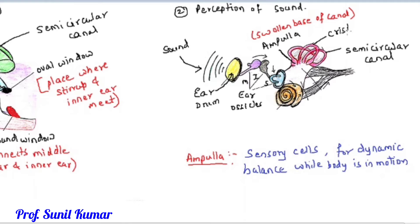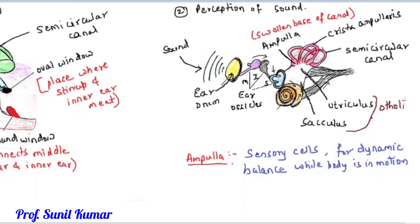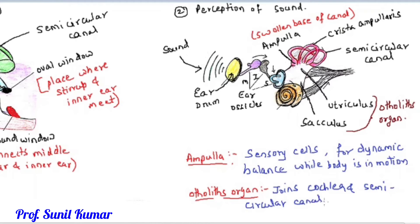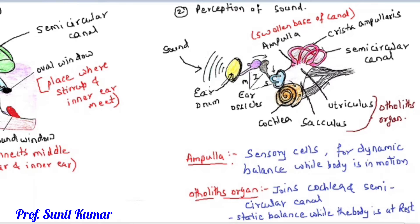The fold of the semi-circular canal is called the crista ampullaris. The base of the crista ampullaris is the utriculus, and the region above the cochlea is called the sacculus. Utriculus and sacculus together are called the otolith's organ. The otolith's organ joins the cochlea and the semi-circular canal, and is responsible for static balance when the body is at rest. Ampulla is for dynamic balance when the body is in motion; the otolith's organ handles static balance.